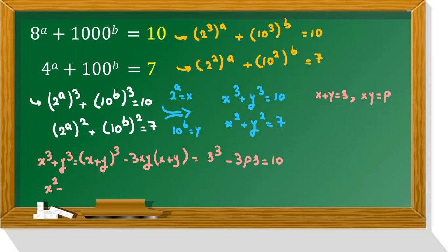x squared plus y squared equal to x plus y whole squared minus 2xy. And it will be s squared minus 2p equal to 7.